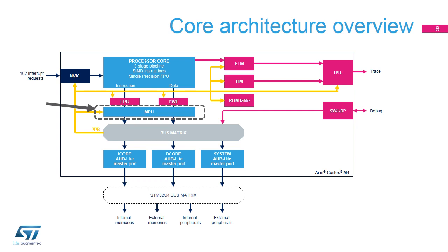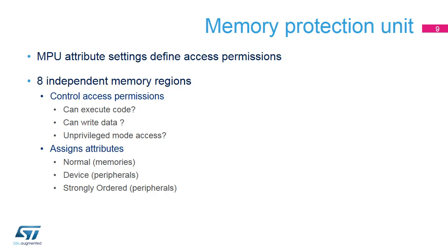When enabled, the MPU intercepts any access initiated by the processor core. The MPU in the STM32G4 microcontroller offers support for eight independent memory regions with independent configurable access permissions: allowed or not, read or write in privileged or unprivileged mode, execution permission, and whether a region is executable or prohibited for instruction fetch.